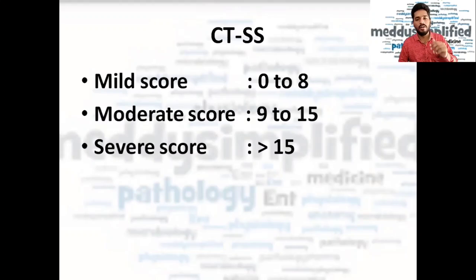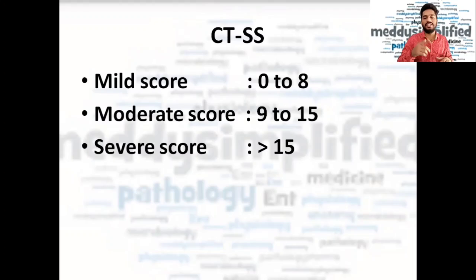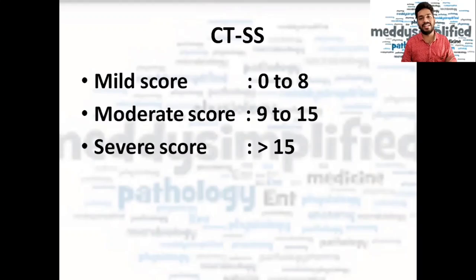So this is what mild, moderate, and severe mean. You may have commonly seen with COVID-19 patients right now that they say they have done their CT scan and it is 16 by 25, or 9 by 25, or 3 by 25 — this is the CT severity scoring system.